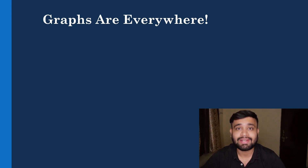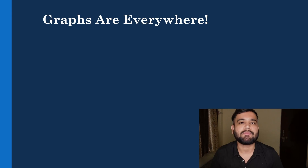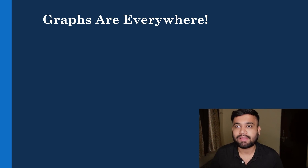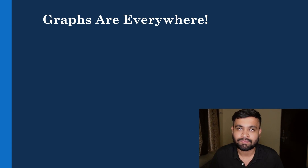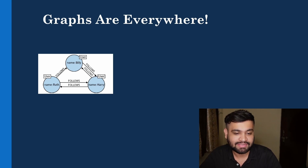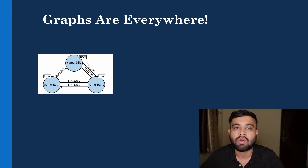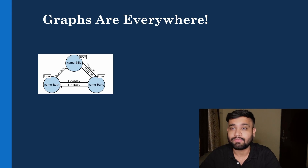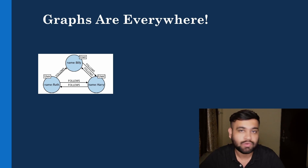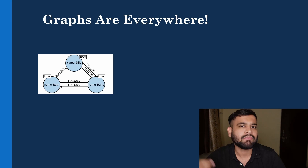Let's take a real world scenario — a Twitter dataset. Twitter has millions of users and they use graph databases as their backbone to store all user information. In our first example, we have three nodes represented as round shapes, and they have a label called 'User'. So 'User' identifies the role in the database. We have three users: Billy, Harry, and Ruth, all labeled as User.